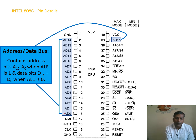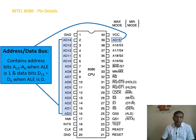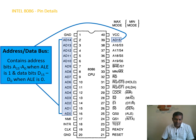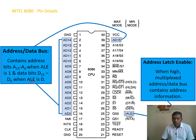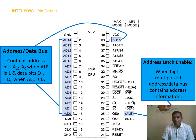The address and data lines can be separated or used for specific purposes with the help of the ALE signal. Through the ALE signal, the address can be latched and will be made available when ALE is high.